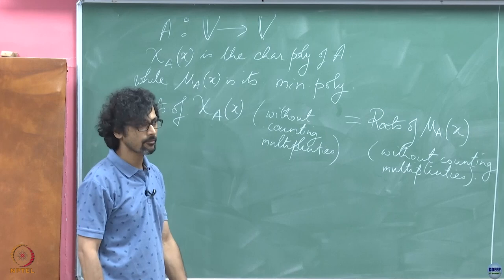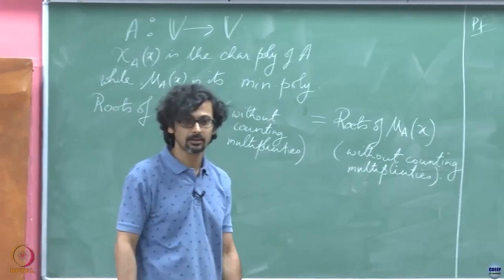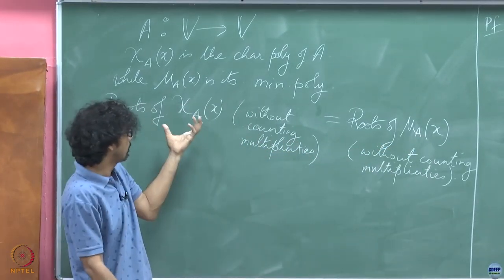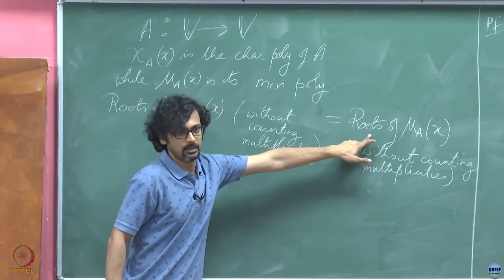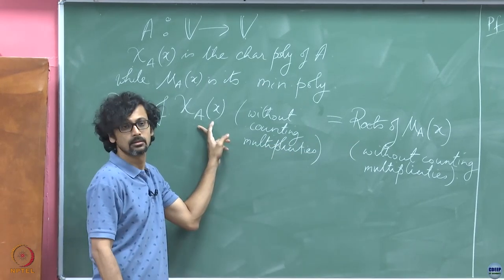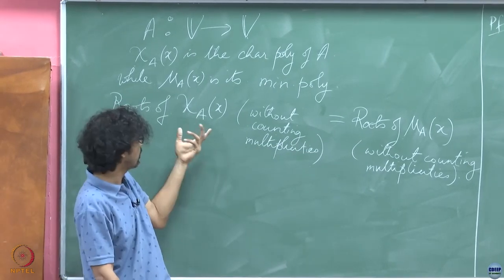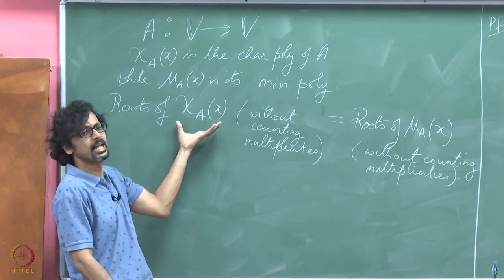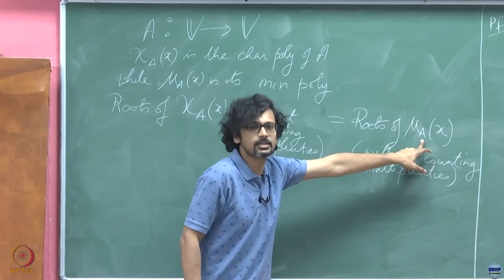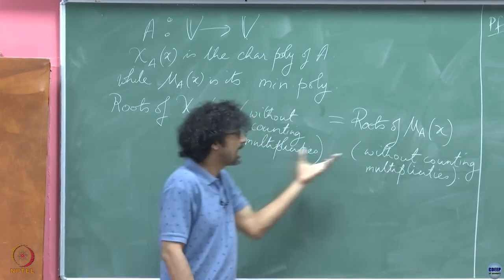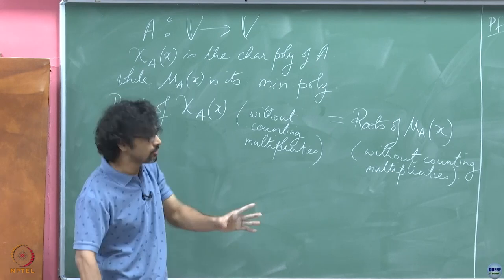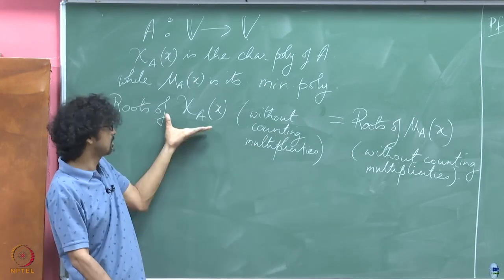They share the same roots, but we don't know how many times they share them. If the multiplicity of a root in the minimal polynomial is less than or equal to the multiplicity in the characteristic polynomial — called the algebraic multiplicity — then you can be sure the minimal polynomial divides the characteristic polynomial. But we have not proved that yet, so we have not given any reason to believe the characteristic polynomial is in the annihilating ideal.